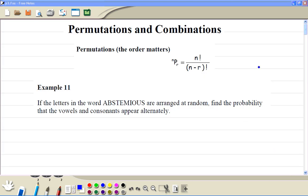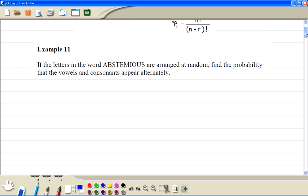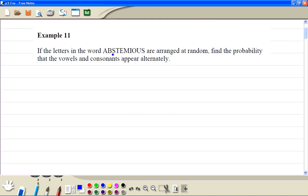Permutations and combinations, example 11. So we got a total number of 10 letters, 5 of them are vowels and 5 of them are consonants.